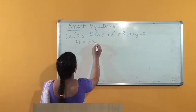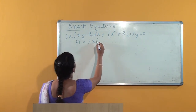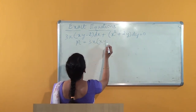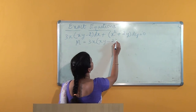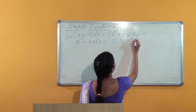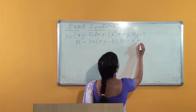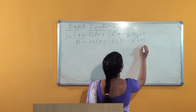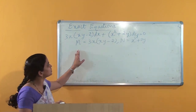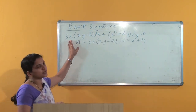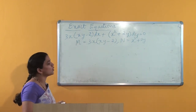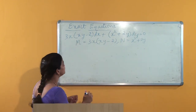You can check that this is an exact equation: M is 3x(xy - 2) and N is x³ + 2y. In the previous video we already checked this equation is an exact equation. Let us see how to solve this exact equation.